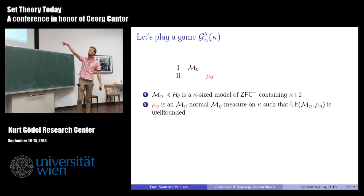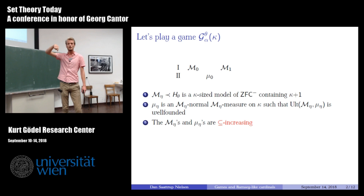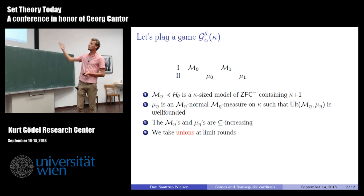Recall that an M₀-measure is just a measure as usual but only measuring the subsets of κ which are elements of M₀. M₀-normal means it is normal with respect to κ-sequences in M₀. We require that the models and measures are subset-increasing, and at limit rounds we take unions of both the measures and the models.